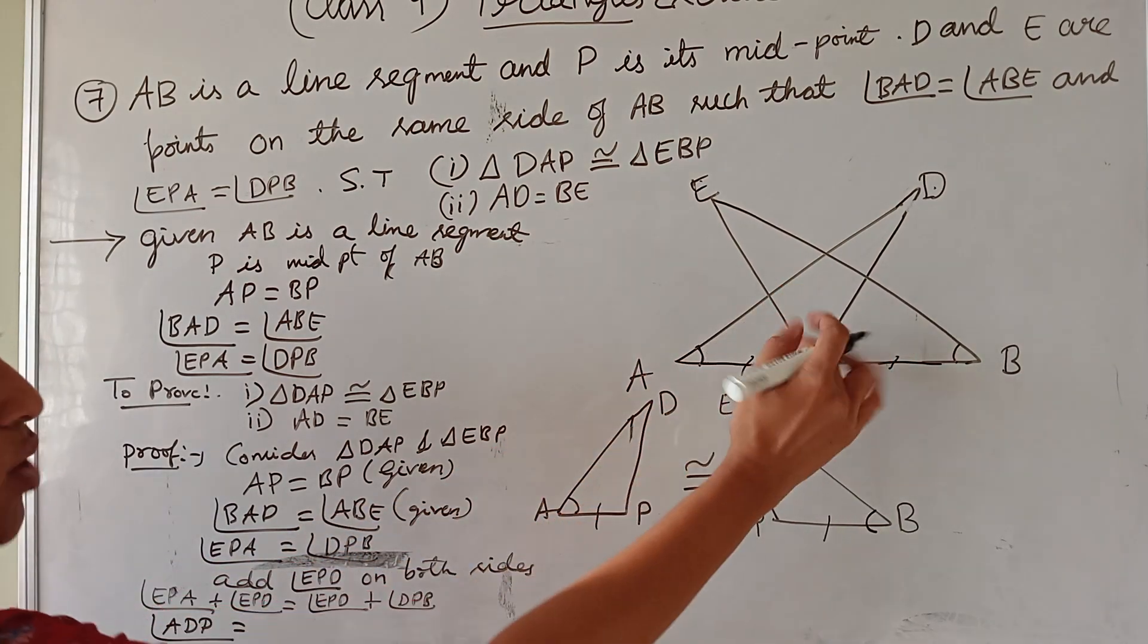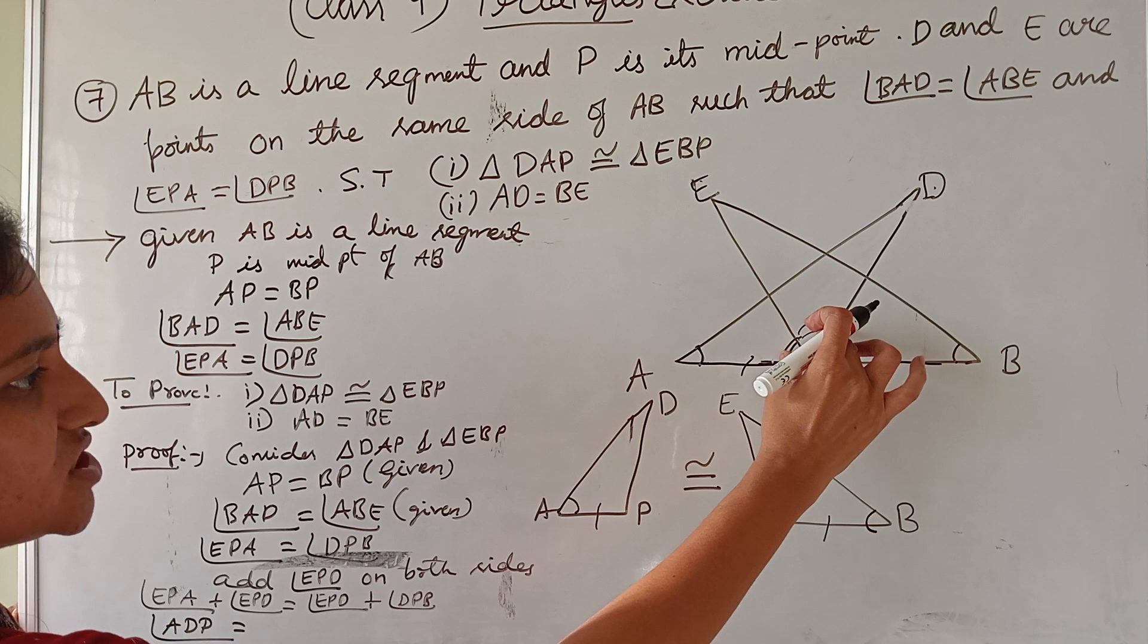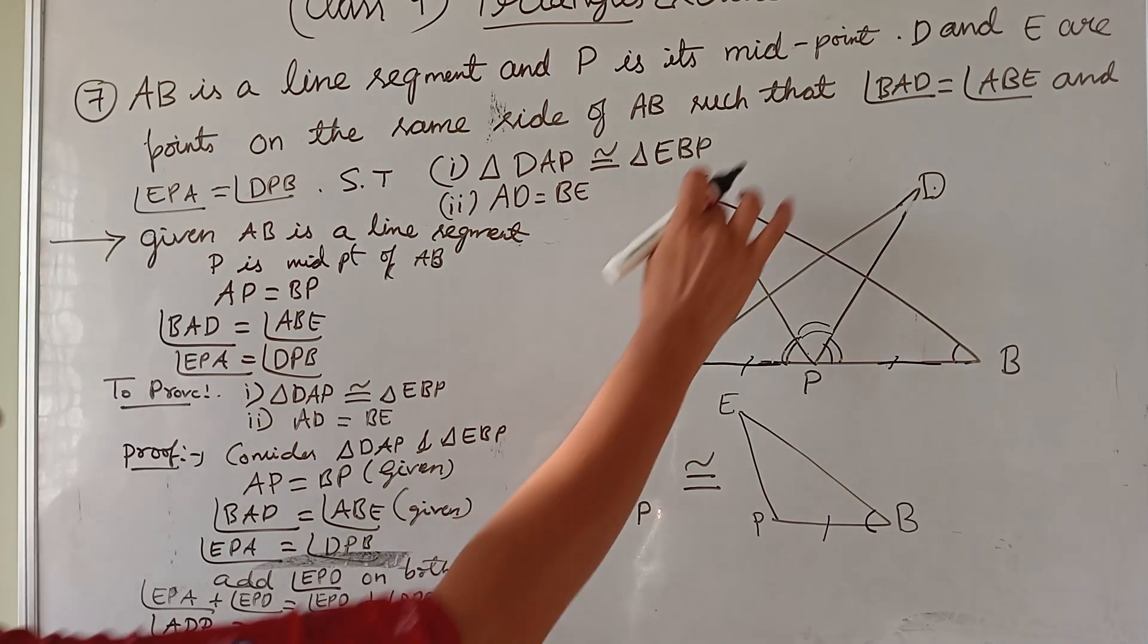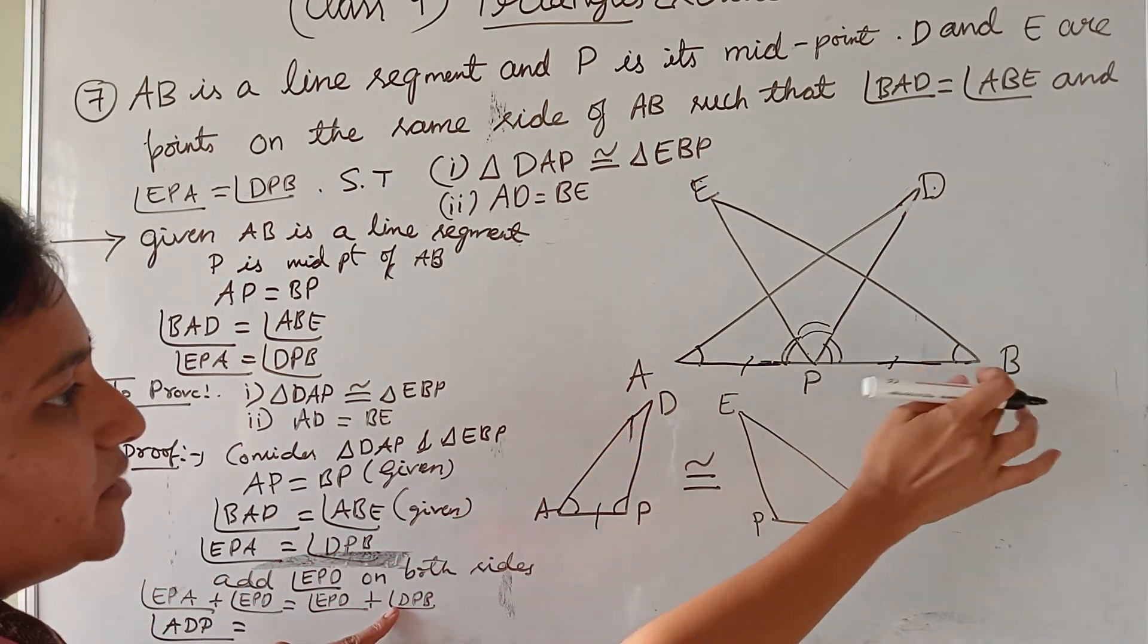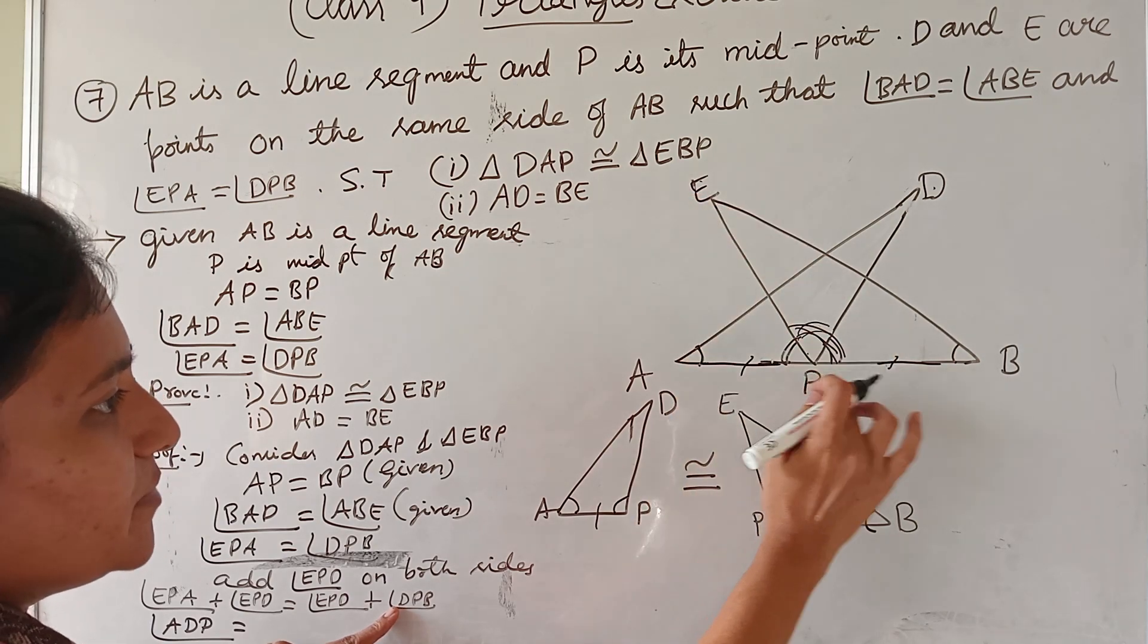If I add these two angles, this angle and this angle, I will get this whole angle P. On another side, EPD plus DPB, these two if I add, I will get EPB.